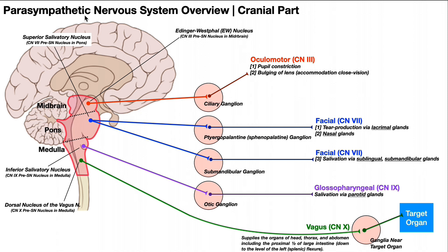The parasympathetic nervous system is the rest and digest half of the nervous system. If you're sitting here watching this video, assuming you don't have anxiety about your exam tomorrow, then probably your parasympathetic nervous system has vast control over your entire body. That parasympathetic nervous system has two parts: a cranial part and a sacral part, which we'll discuss in a separate video. It's often called the craniosacral division of the autonomic nervous system.